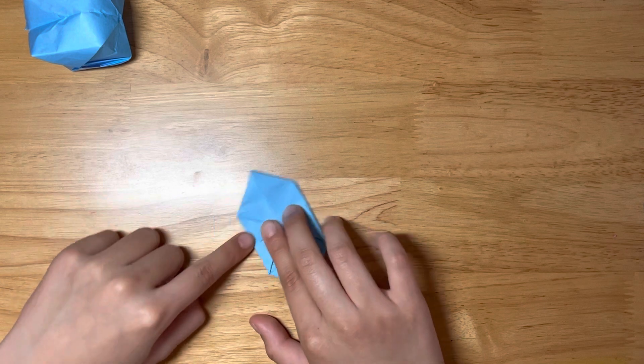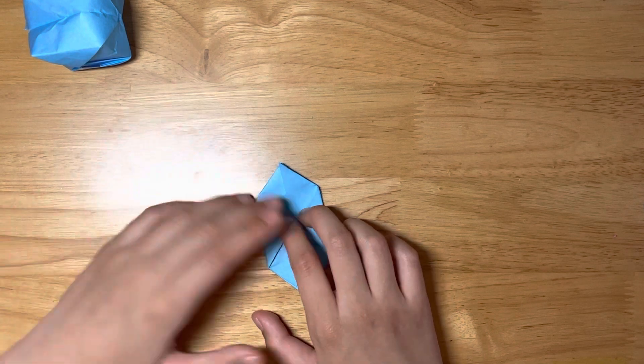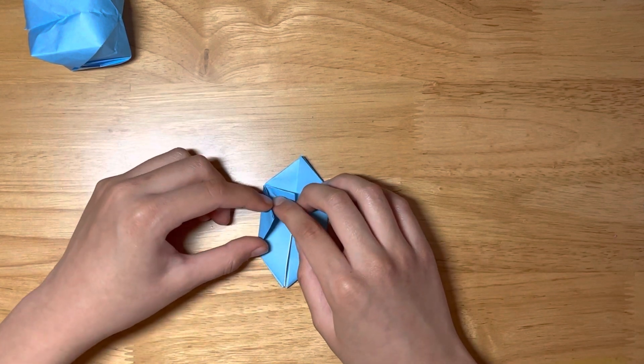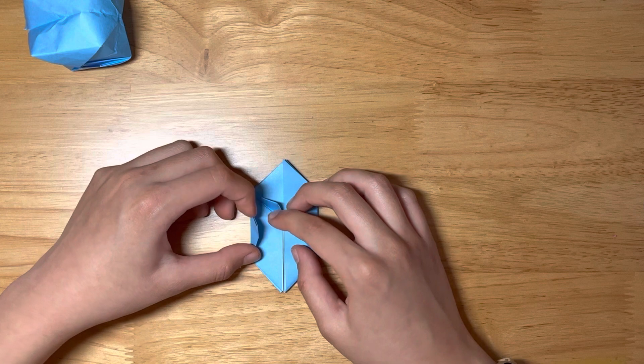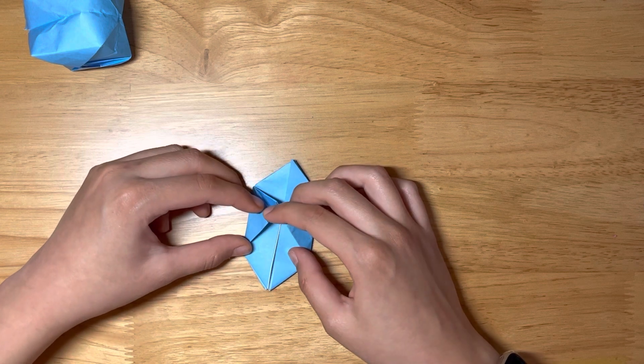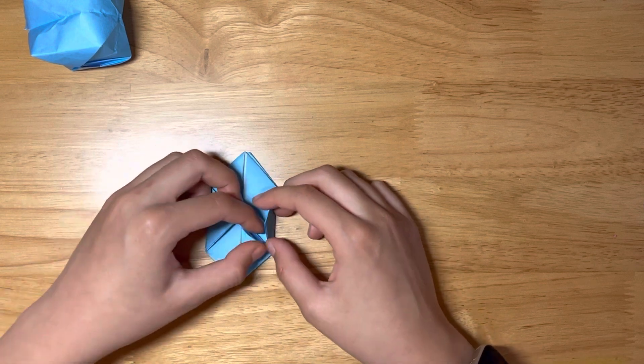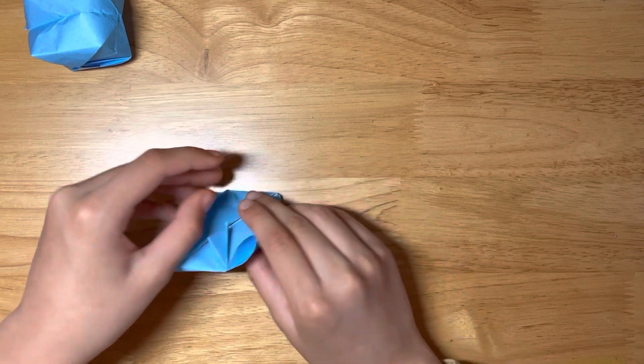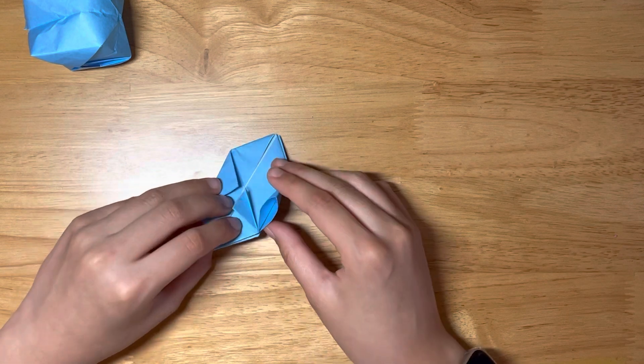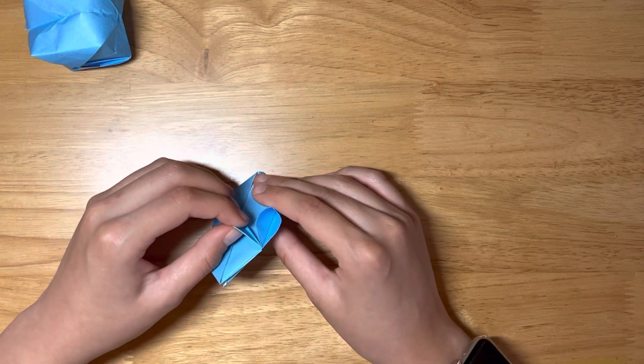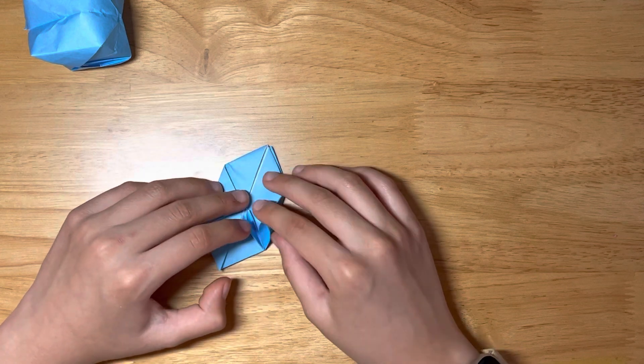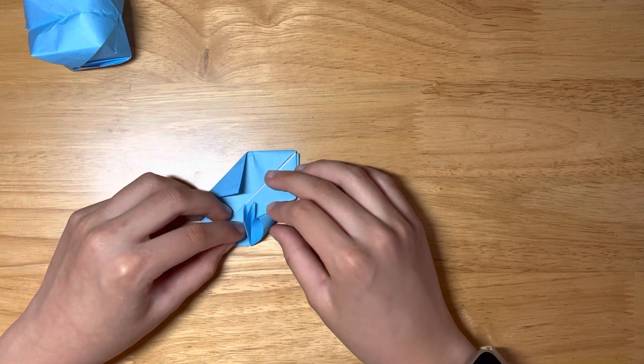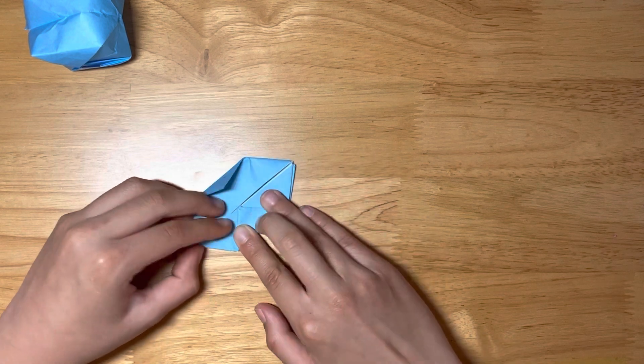It doesn't matter if there's this little space. So now we have a little pocket over here. I'm going to turn it over, turn it around. This little pocket - we're going to put this triangle inside the pocket, like that.